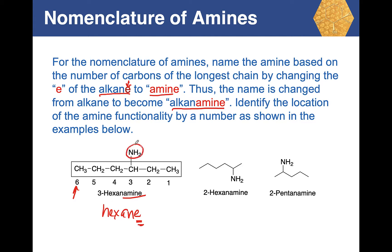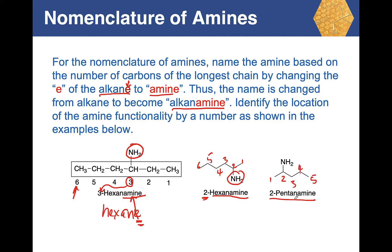For another example with six carbons and the amine on carbon 2, the name is 2-hexanamine. Similarly, with five carbons and the amine on carbon 2, it becomes 2-pentanamine. The rule is: convert the alkane root by replacing the terminal 'e' with 'amine,' and include the position number of the amine functionality.